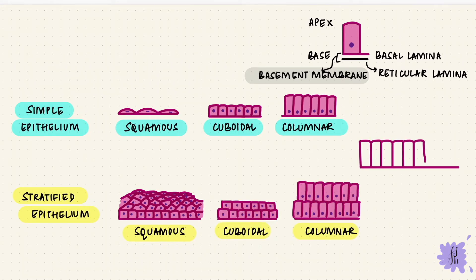Now sometimes, particularly with columnar epithelium, the cells can be arranged such that they appear like multiple layers, but they're actually just one layer. It's falsely stratified. That's pseudostratified epithelium because it just looks like it's stratified. All of the cells touch the basement membrane, but some of them don't reach the surface.